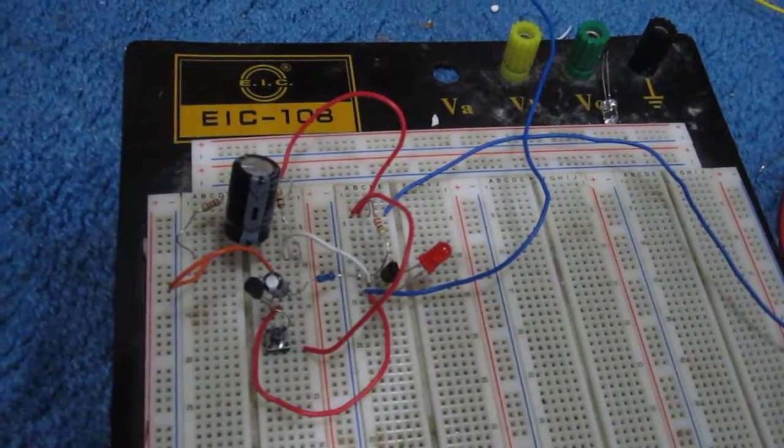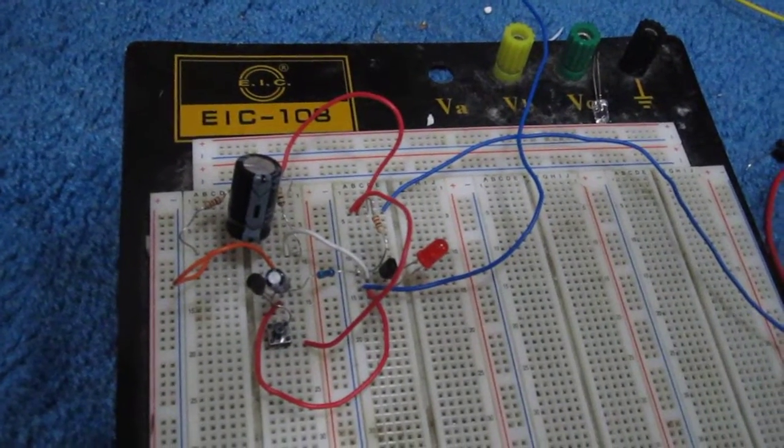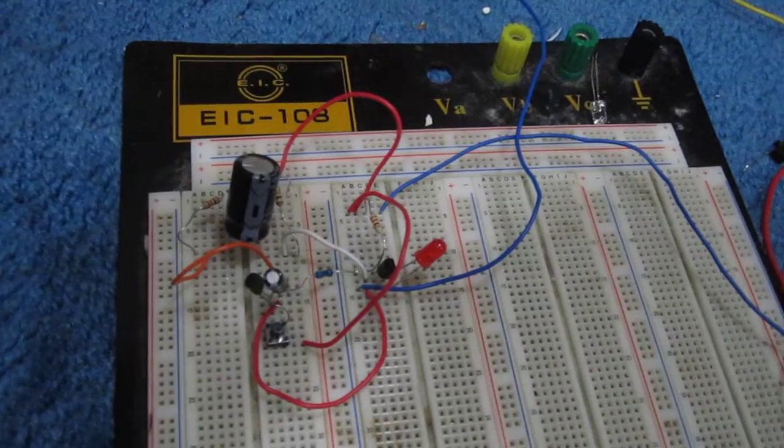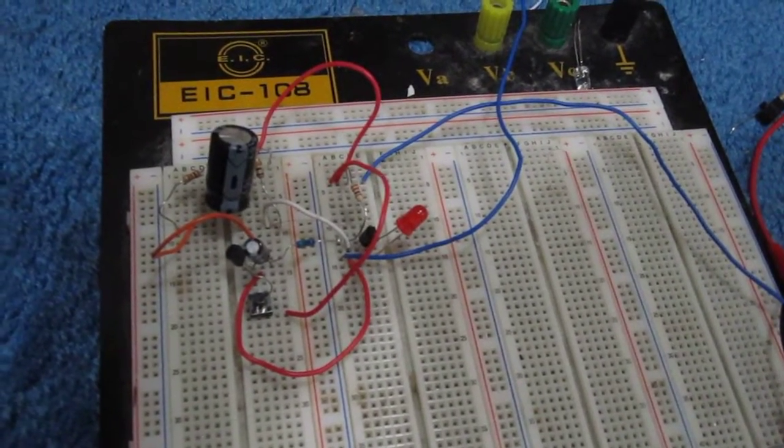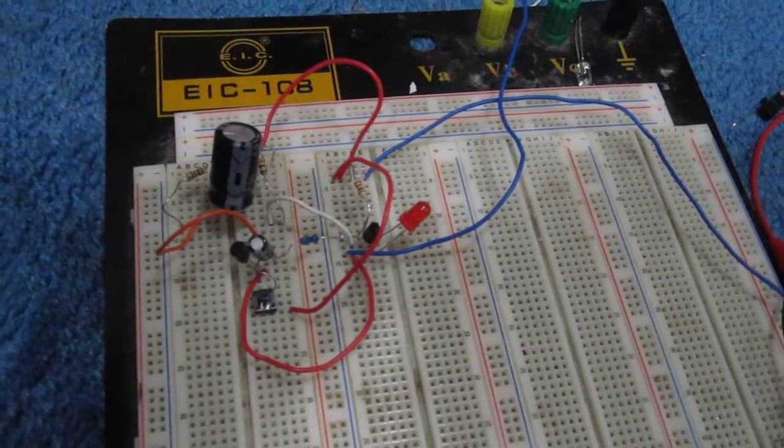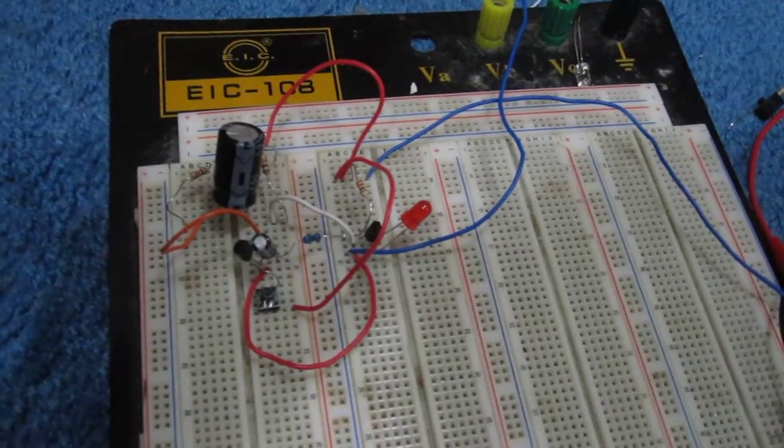So this is how a monostable multi-vibrator circuit can operate with two transistors and a few other simple components. To see the schematic diagram of this circuit, as well as the in-detail explanation of how this circuit works, please click the link below.